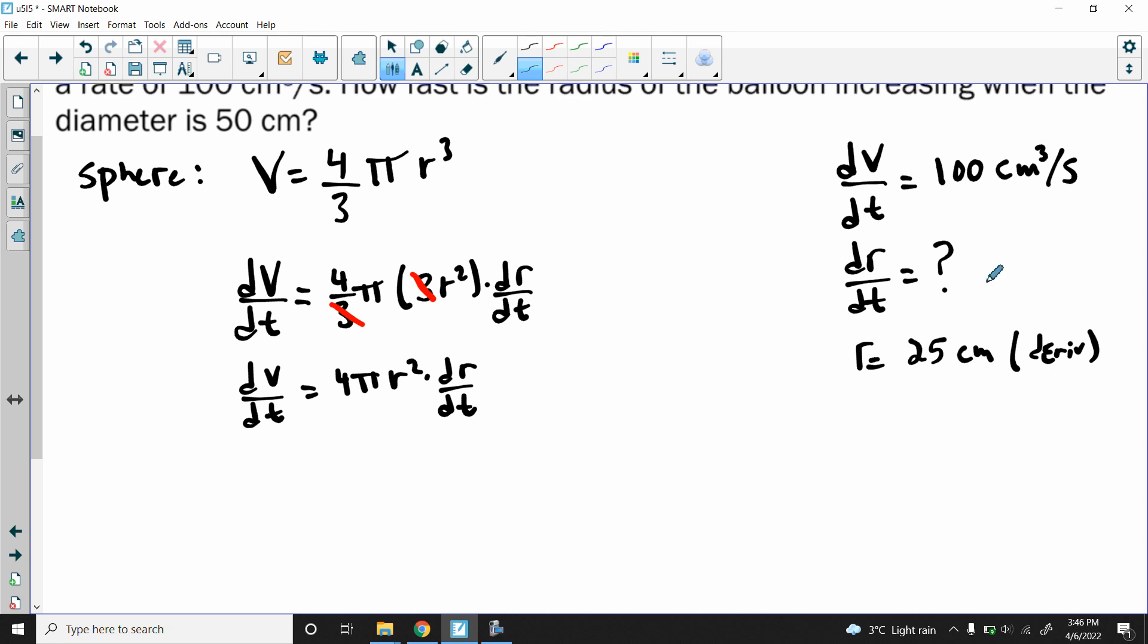Now I've got the derivative simplified as much as I possibly can and I've basically got everything I need. I've got my dV/dt that's 100, so I can fill that in. I'll put 100 right there. Then I'll rewrite my four pi and I've got my r squared which is 25 squared, and then I'm trying to find that dr/dt.